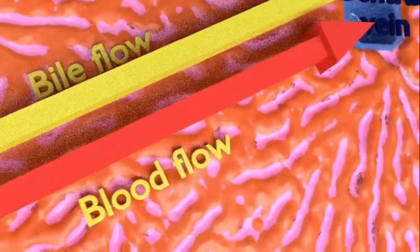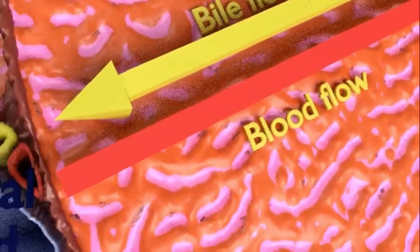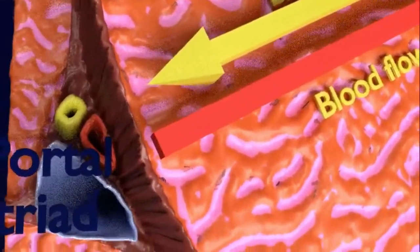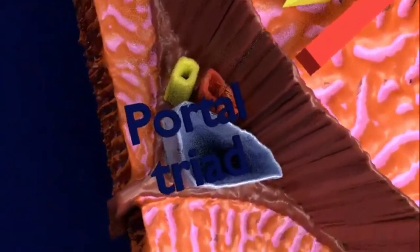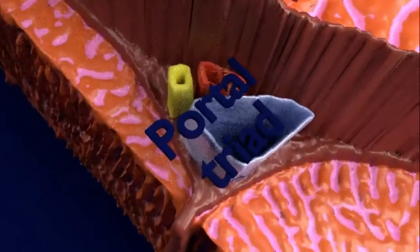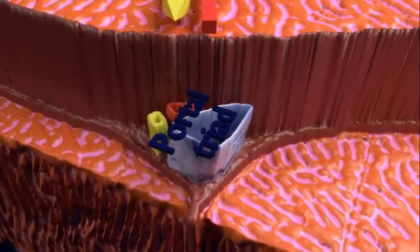As you can see here, the direction of flow of bile from the biliary canaliculi is from the hepatocytes of the central region of the anatomical lobule to the bile ducts of the portal triad, which are present at the periphery of each lobule.